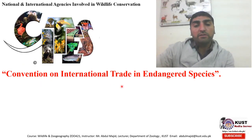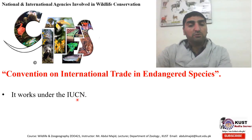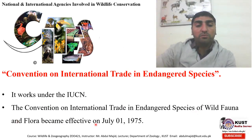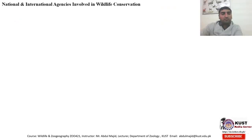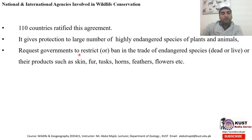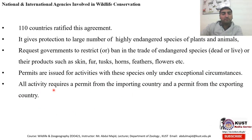CITES — the Convention on International Trade in Endangered Species of Wild Fauna and Flora — works under the umbrella of IUCN. It became effective on July 1st, 1975, and 110 countries ratified this agreement, giving protection to a large number of highly endangered species of plants and animals. They request governments to restrict or ban the trade of endangered species — dead or alive — or their products such as skin, fur, tusks, feathers, and flowers. Permits are issued only under exceptional circumstances, and all activity requires a permit from both the importing country and the exporting country.